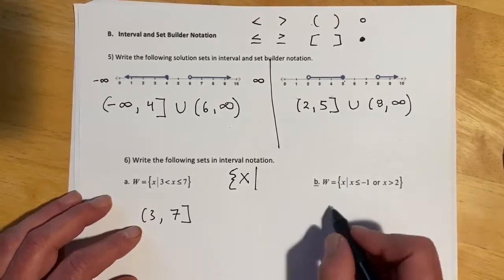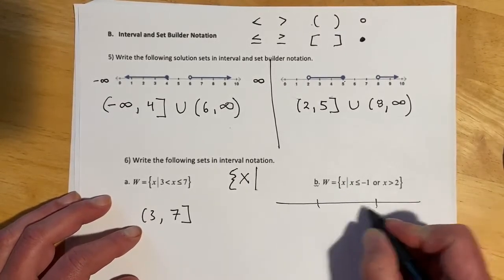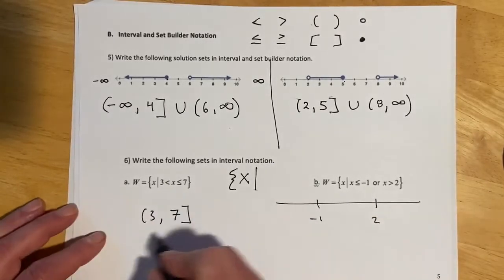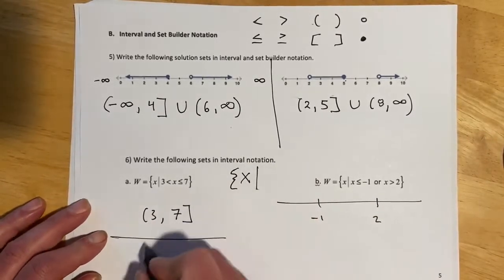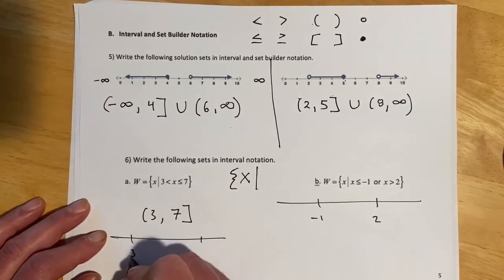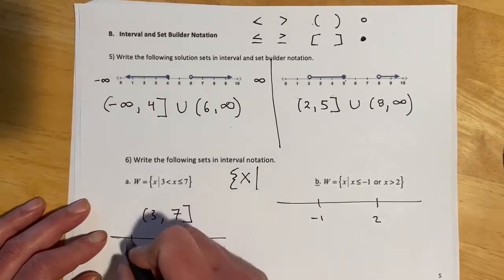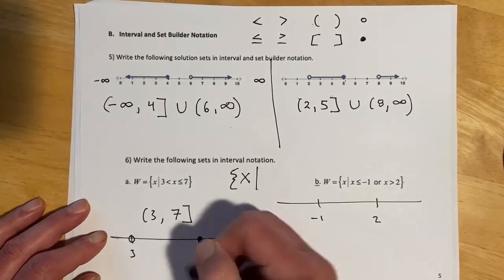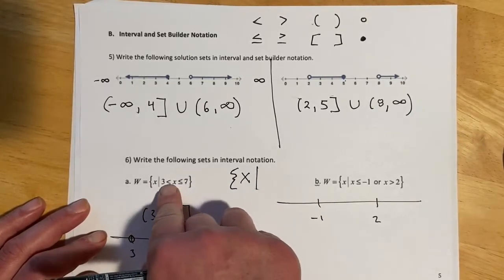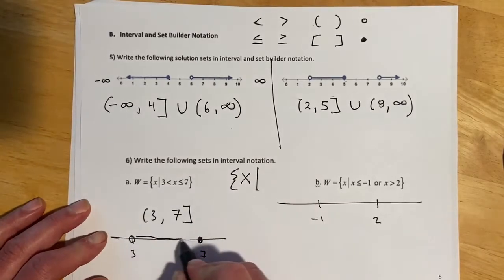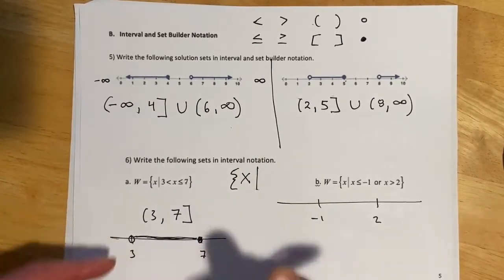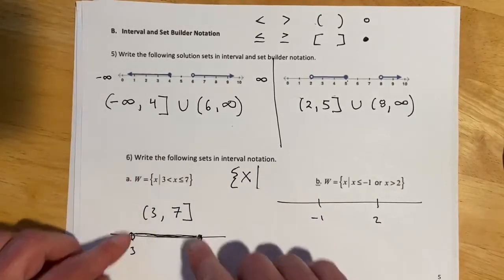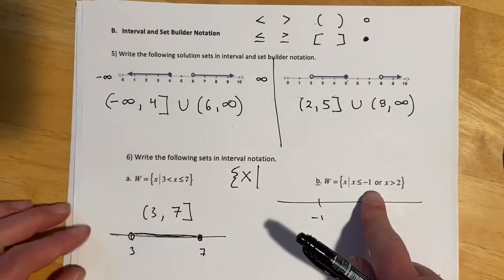This is one of those continued inequalities. So this would go from 3 to 7 with a bracket. On the graph, 3 would be an open dot and 7 would be a solid dot. This notation actually looks a fair bit like the graph. The interval notation goes from parenthesis at 3 to bracket at 7.